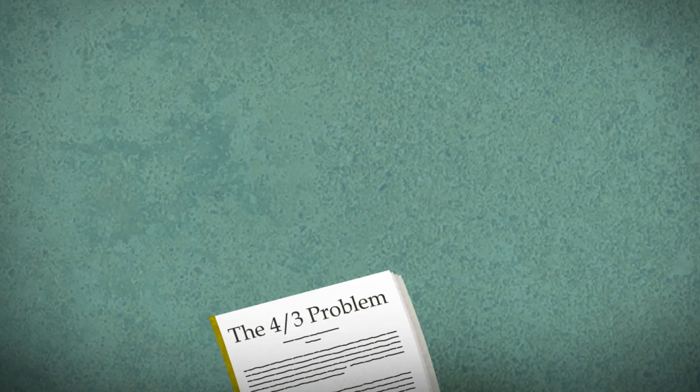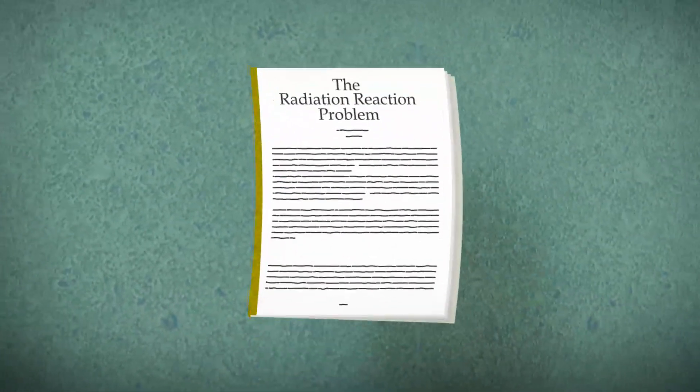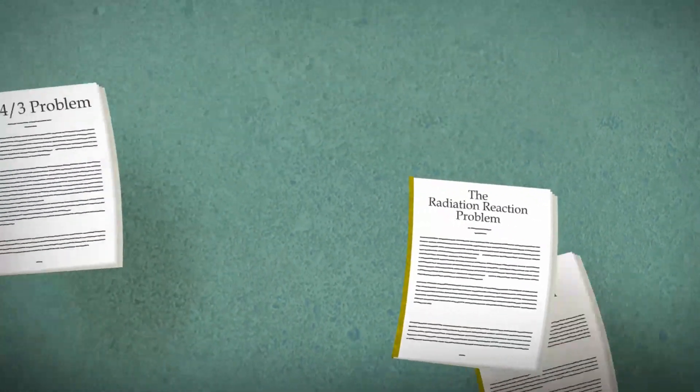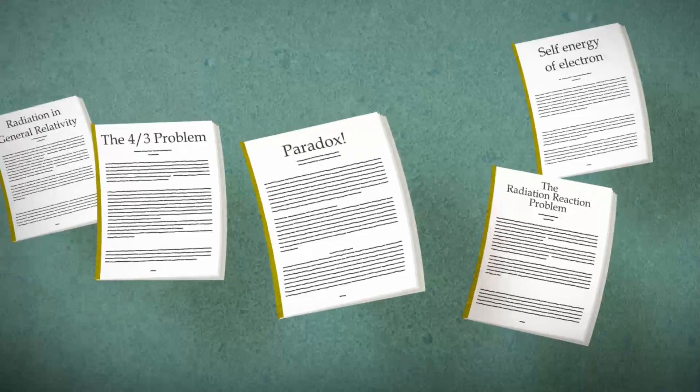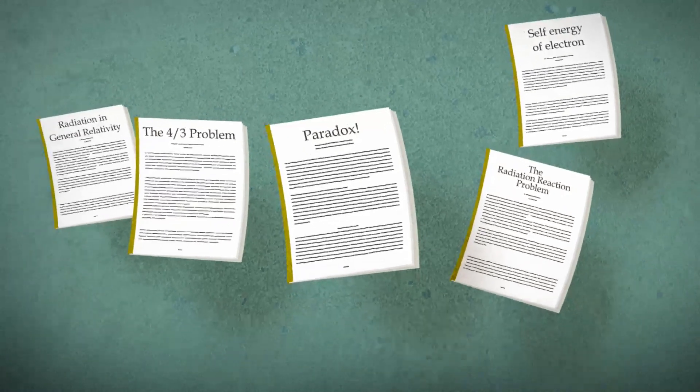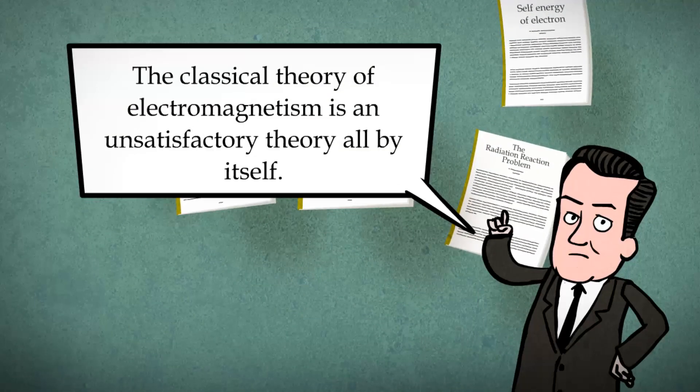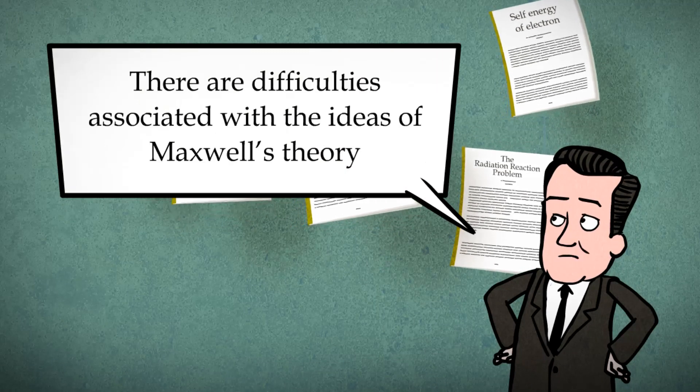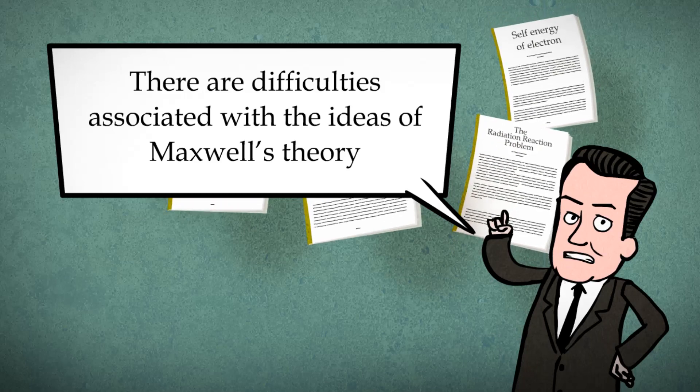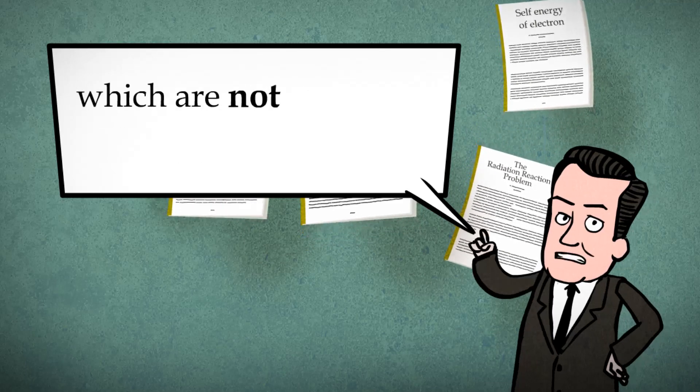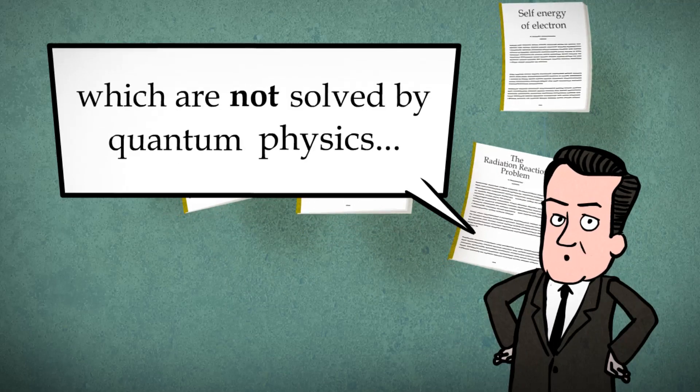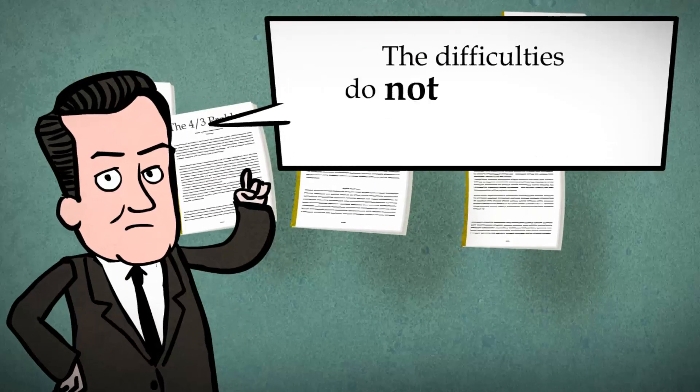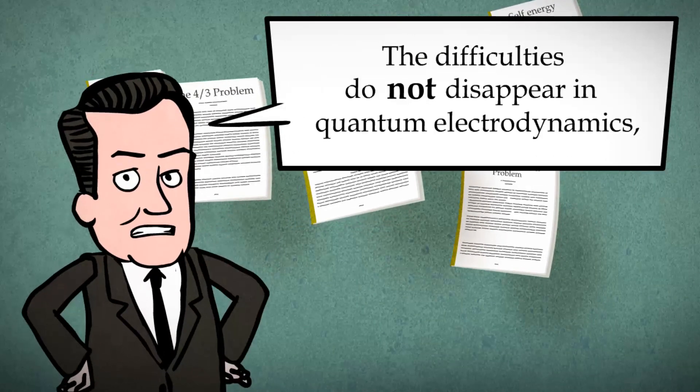We have only talked about a few paradoxes in classical electrodynamics, but there are more. This shows how incomplete our model of nature is. Feynman said, the classical theory of electromagnetism is an unsatisfactory theory all by itself. There are difficulties associated with the ideas of Maxwell's theory which are not solved by quantum physics. The difficulties do not disappear in quantum electrodynamics. The problems are associated with the concepts of electromagnetic momentum and energy.